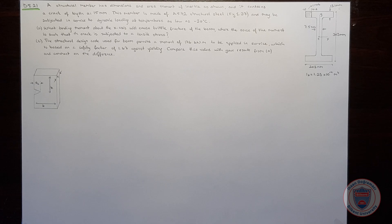In part A, our goal is to find the bending moment about the x-axis which will cause brittle fracture of the beam. In part B, we have the information that the structural design code used for beam permits a moment of 176 kNm to be applied in service, which is based on a safety factor of 1.67 against yielding. We are going to compare this value with our result from part A and comment on the difference.